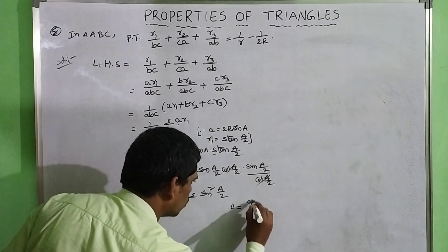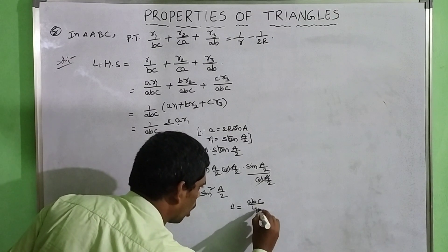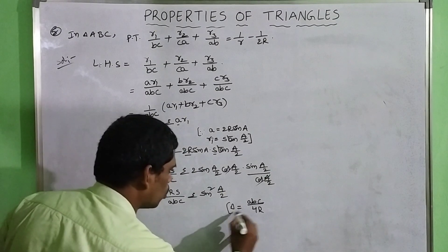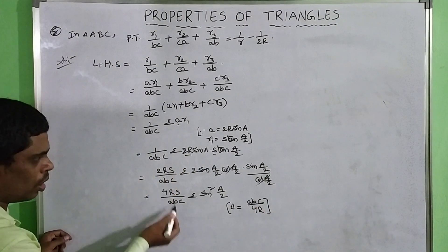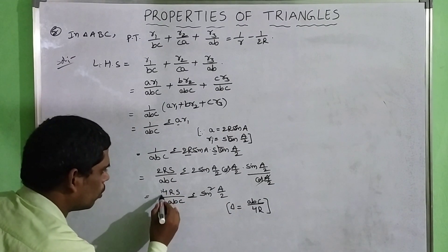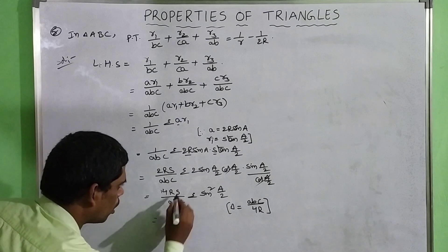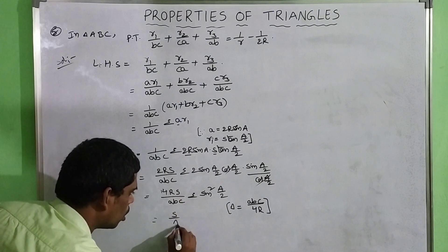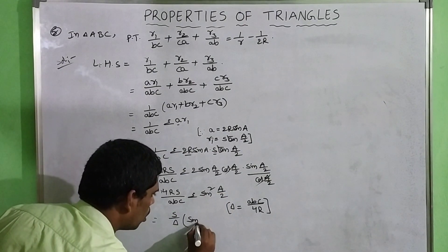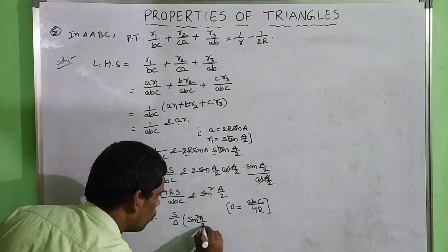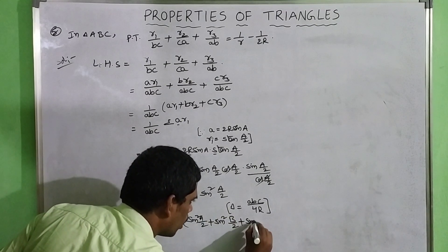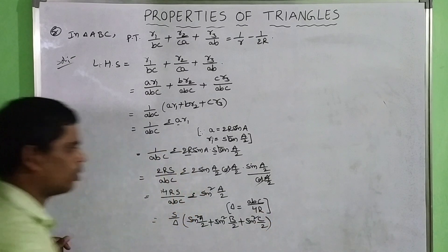Using the formula delta = ABC/4R, the reciprocal is 4R/ABC = 1/delta. So the expression becomes (S/delta) × [sin²(A/2) + sin²(B/2) + sin²(C/2)].